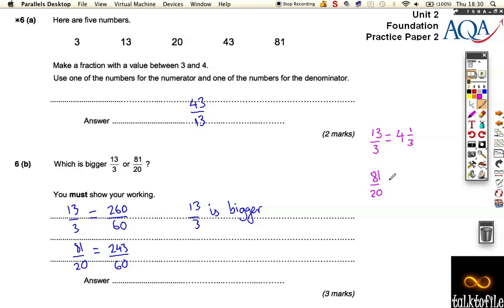81 over 20 goes in 20, 40, 60, 80, that's 4 wholes, and one twentieth left over. So you can see the fours are the same, so you've just got to compare the third and the twentieth, and so 13 over 3 is biggest, and the reason is because one third is bigger than one twentieth.